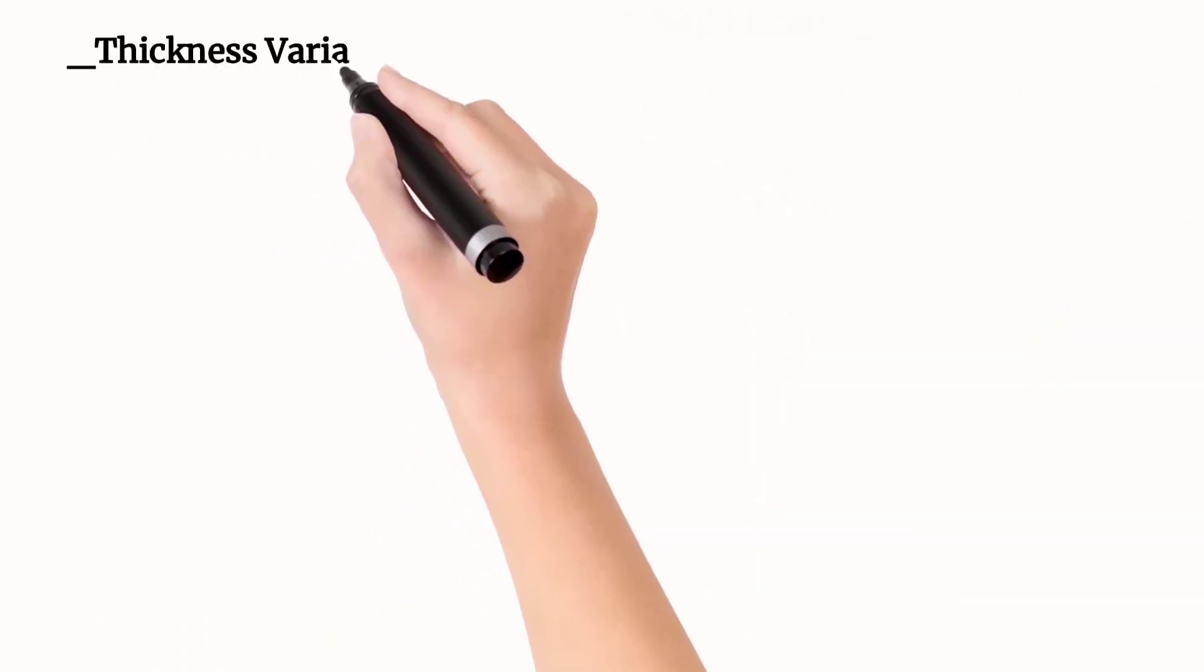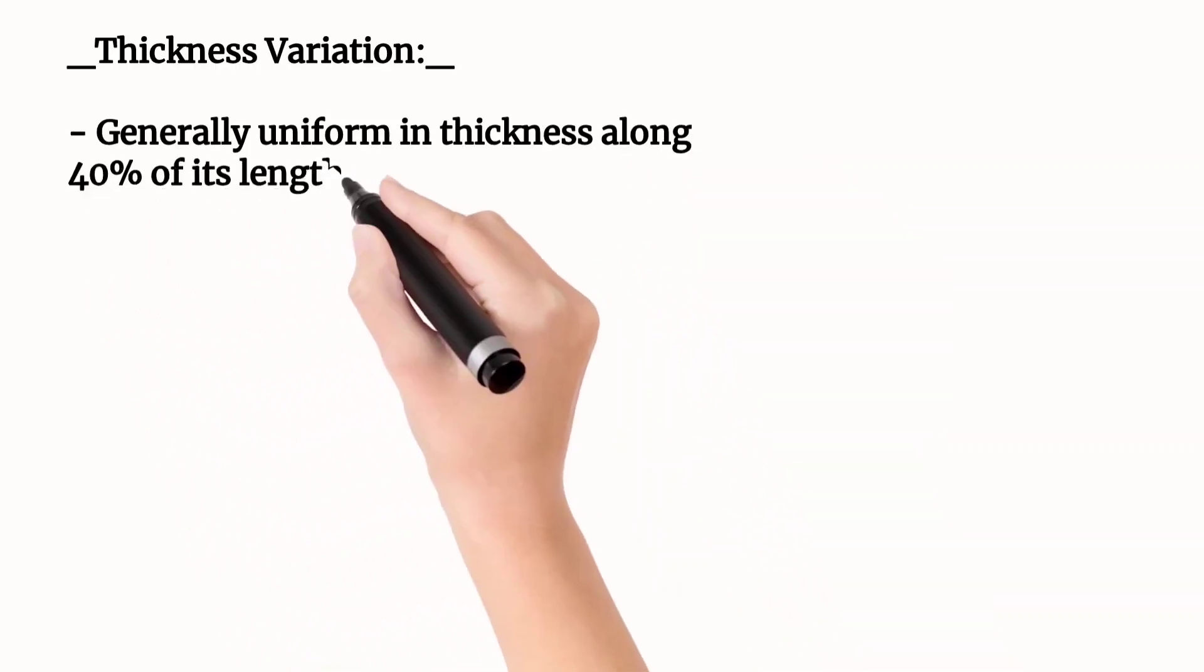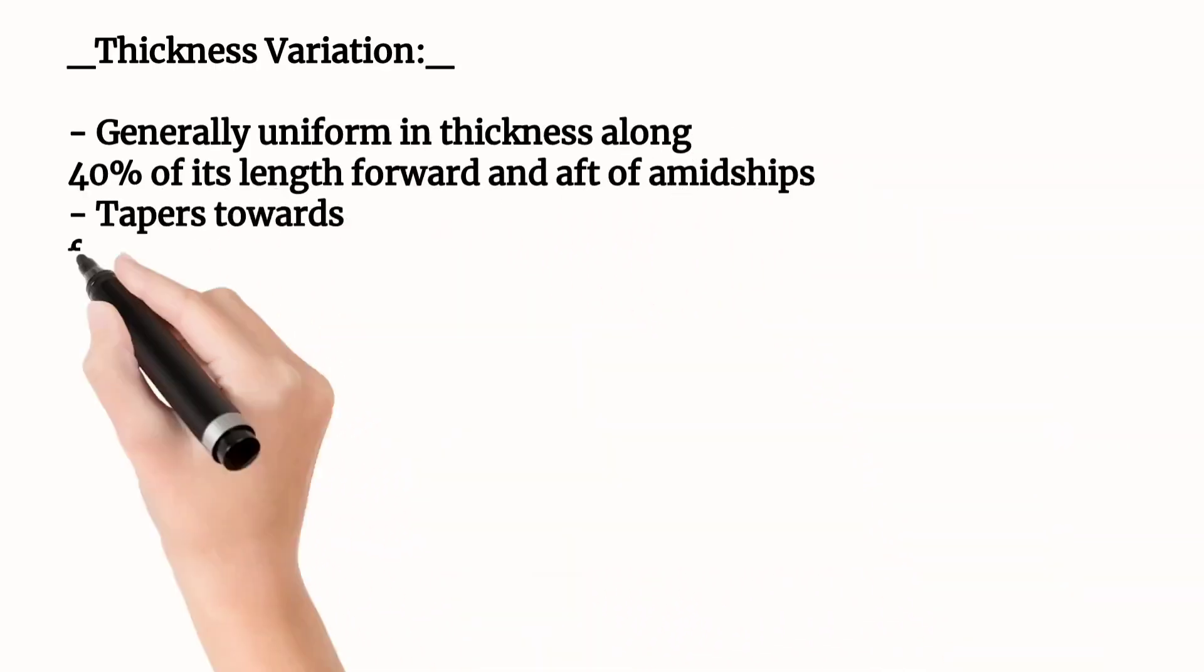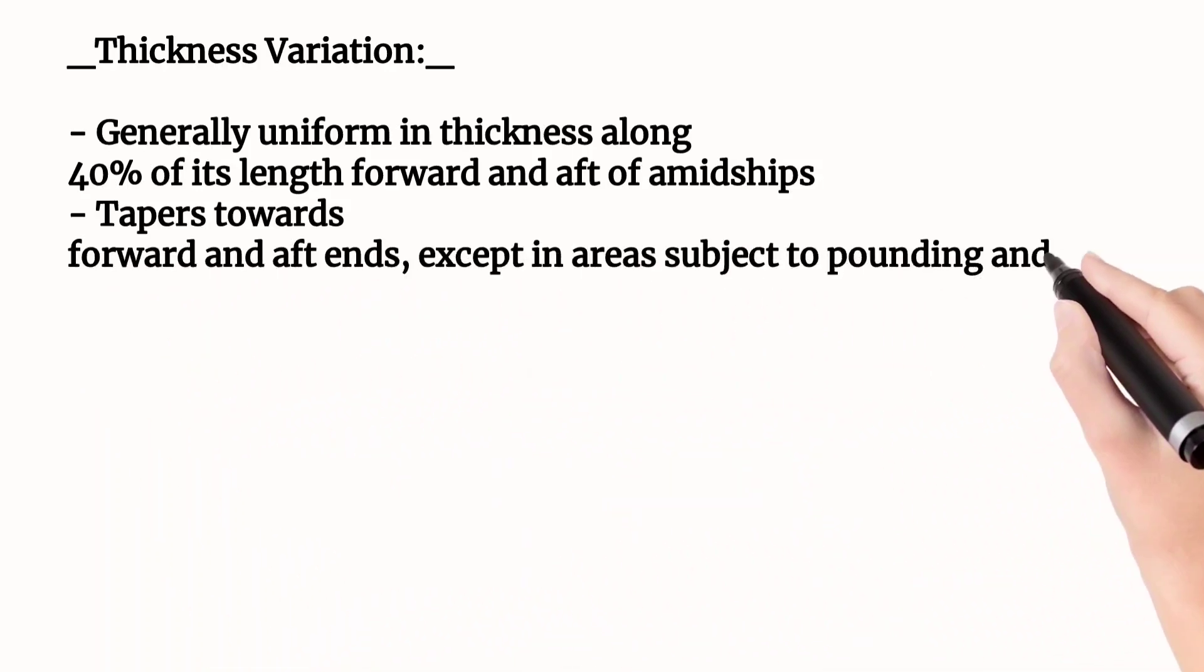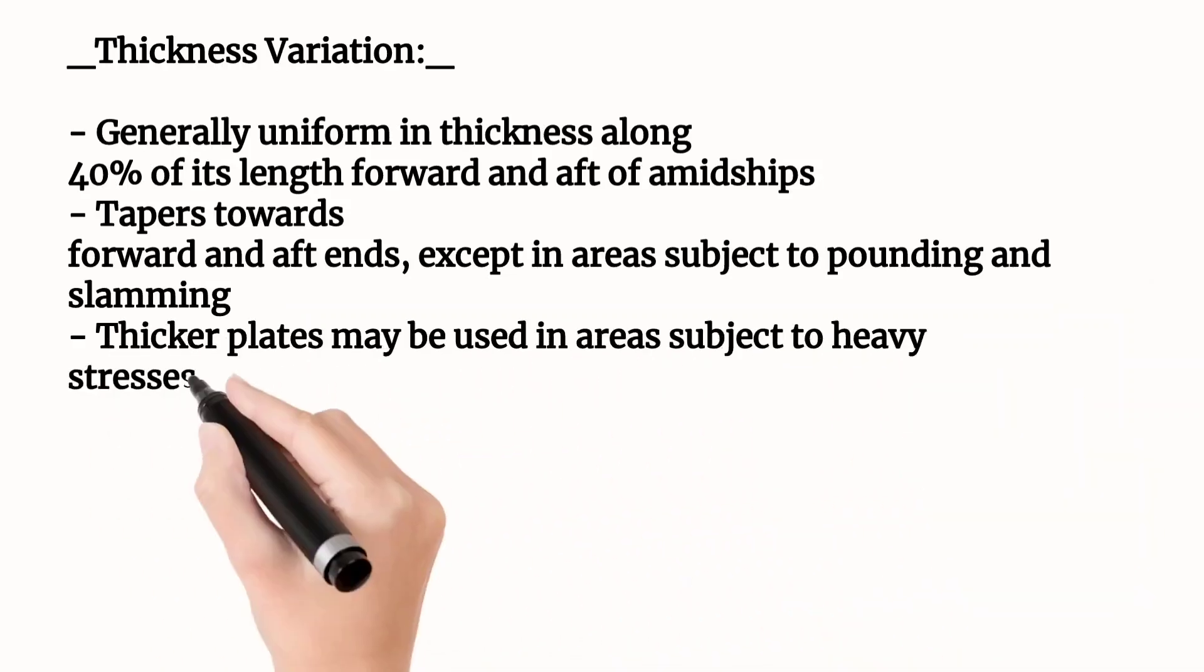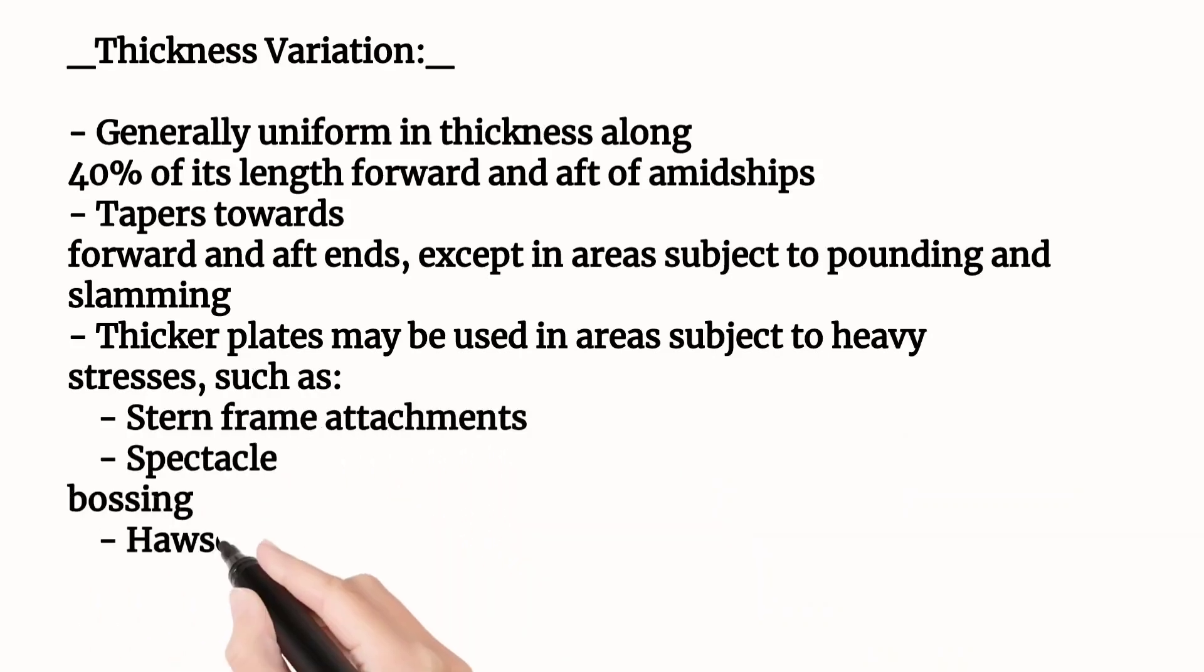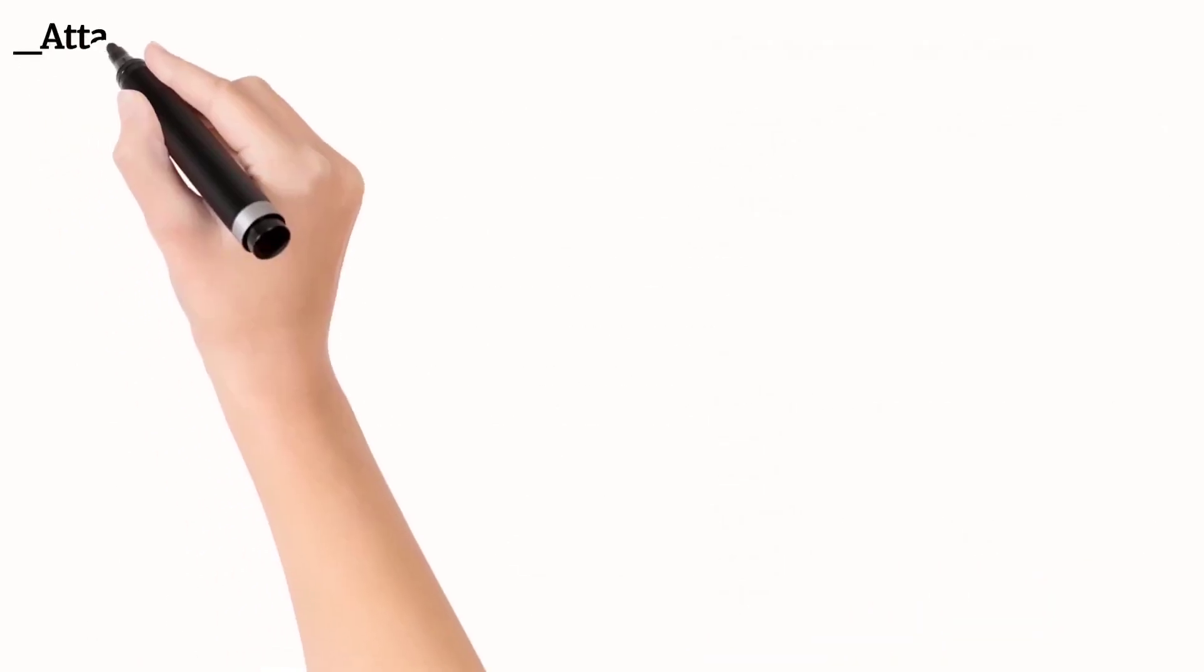Now let's see the thickness variation in the shell plating. It is generally uniform in thickness along 40% of its length forward and aft of the amidships, but it tapers towards the forward and aft ends, except in areas subject to pounding and slamming stress. Thicker plates may be used in areas subject to heavy stresses, such as stern frame attachments, propeller bossings, and hawse pipes with heavy insert plates or doubler plates.